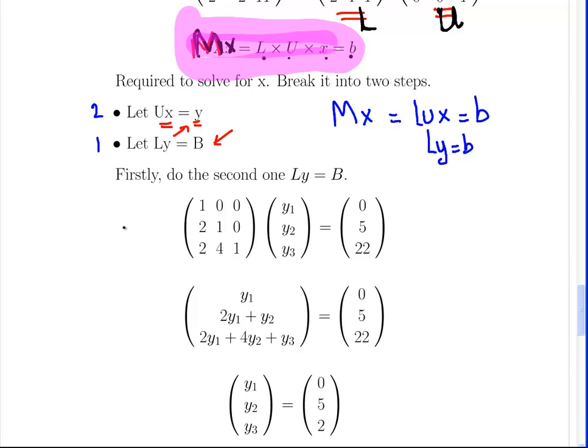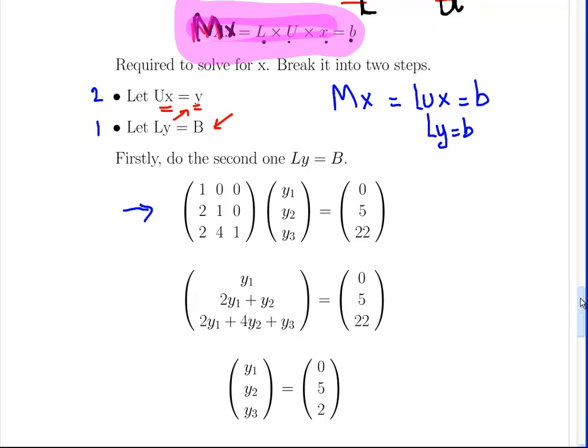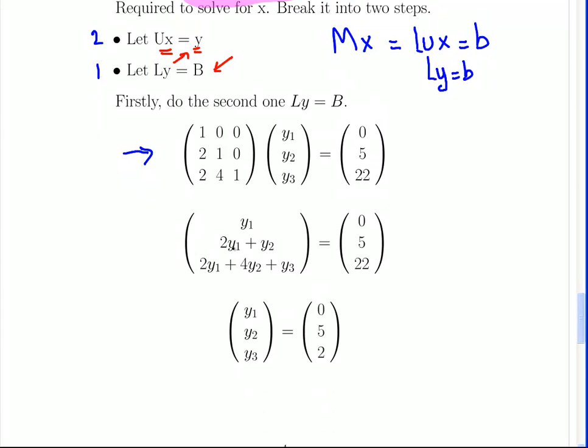So what we're going to do here is we have L and Y in matrix form. What we're going to do is just multiply them out. So we have y1, 2y1 plus y2, 2y1 plus 4y2 plus y3 and that is equal to 0, 5 and 22. Well clearly y1 is going to be 0. Necessarily 2y1 plus y2 equals 5. So necessarily 2 times 0 is 0 and that gives you 5. So this is equal to 5.